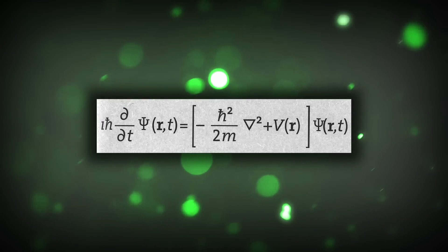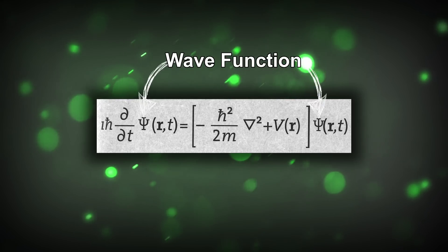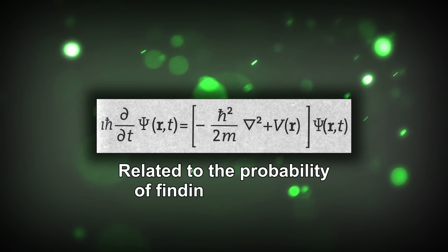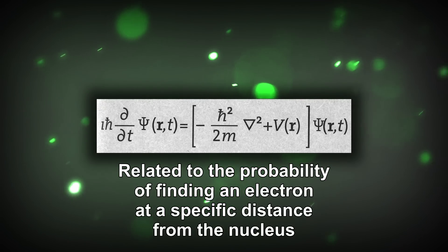Born believed that the square of Schrödinger's wave function was related to the probability of finding an electron at a specific distance from the nucleus.